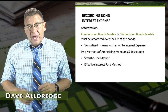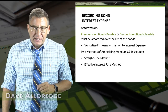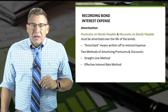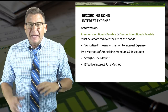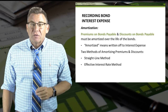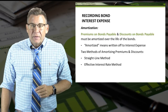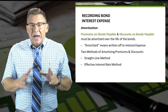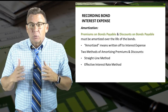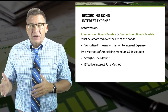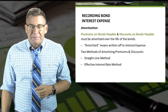When bonds are issued at premium or discount prices, the premium or discount balance must be amortized over the life of the bond. This means that the balance in those types of accounts must be written off to interest expense over the life of the bond.